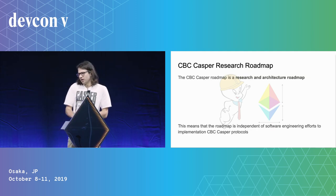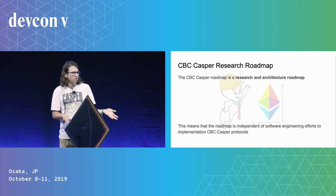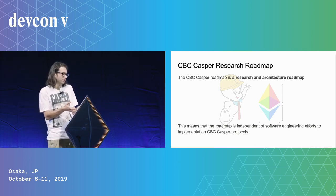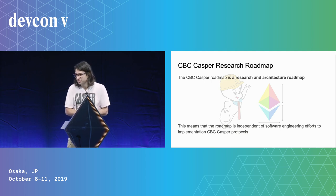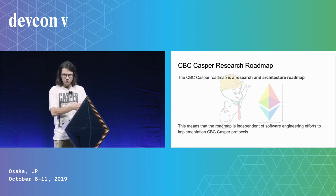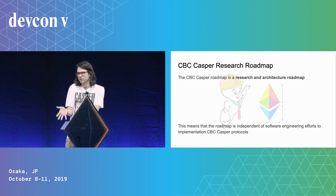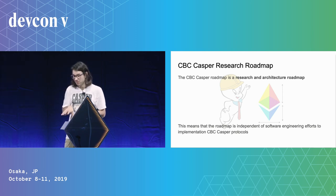The CBC-Casper roadmap is a research and architecture roadmap. The outputs are research and specifications. The goal is to produce architecture and research in the form of distributed systems and theoretical computer science, but also to produce specifications which serve as abstract descriptions of protocols. If you implement anything that matches the specifications, you get all the benefits of the architecture. It's up to engineers to implement the architecture in a way that works for them, and any implementation will inherit the properties of the architecture.